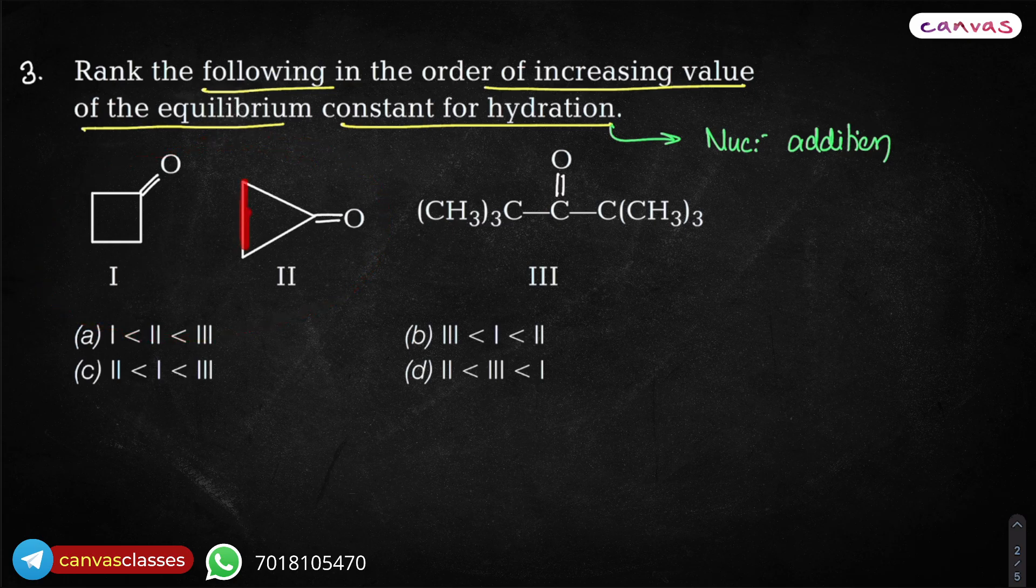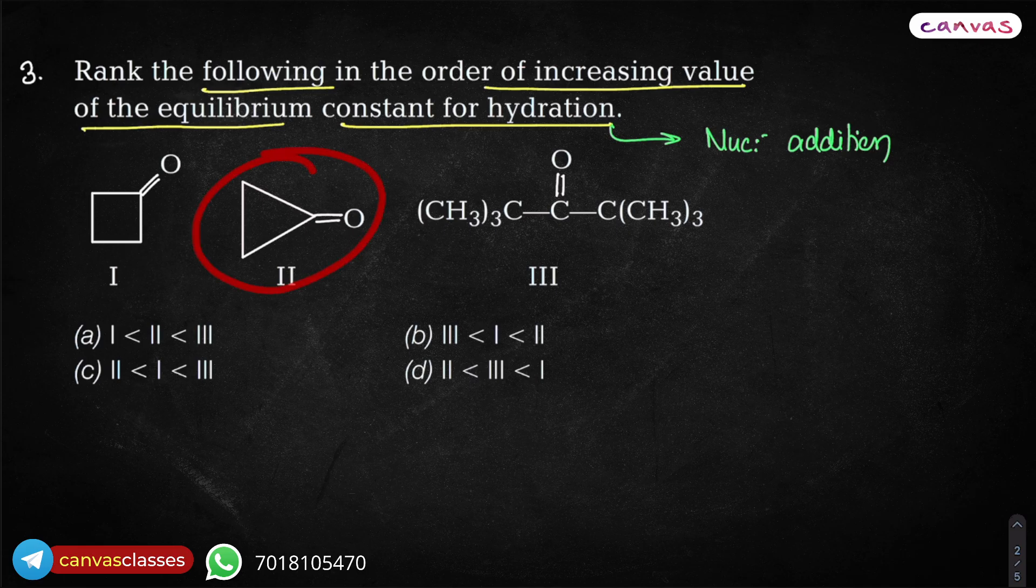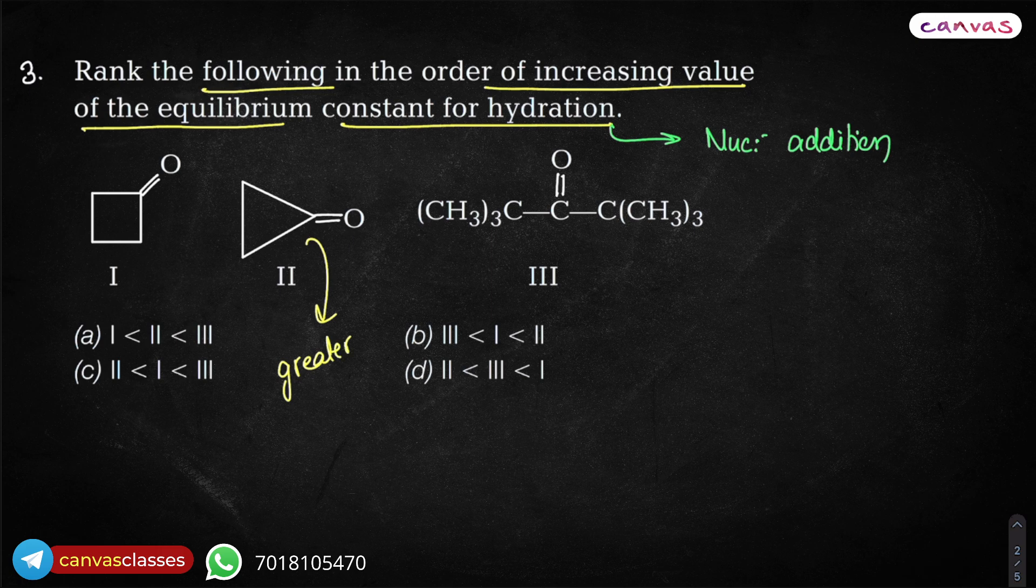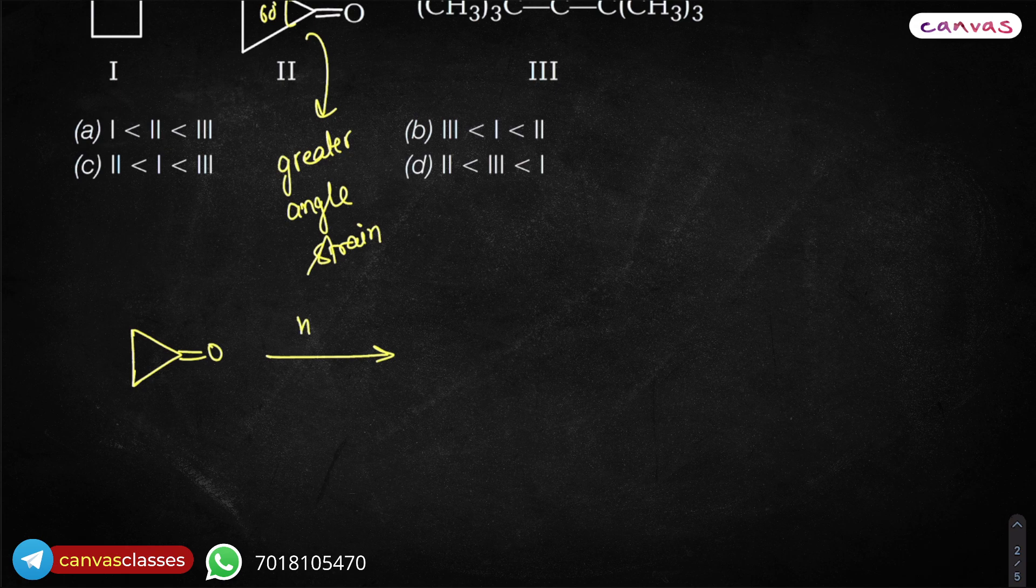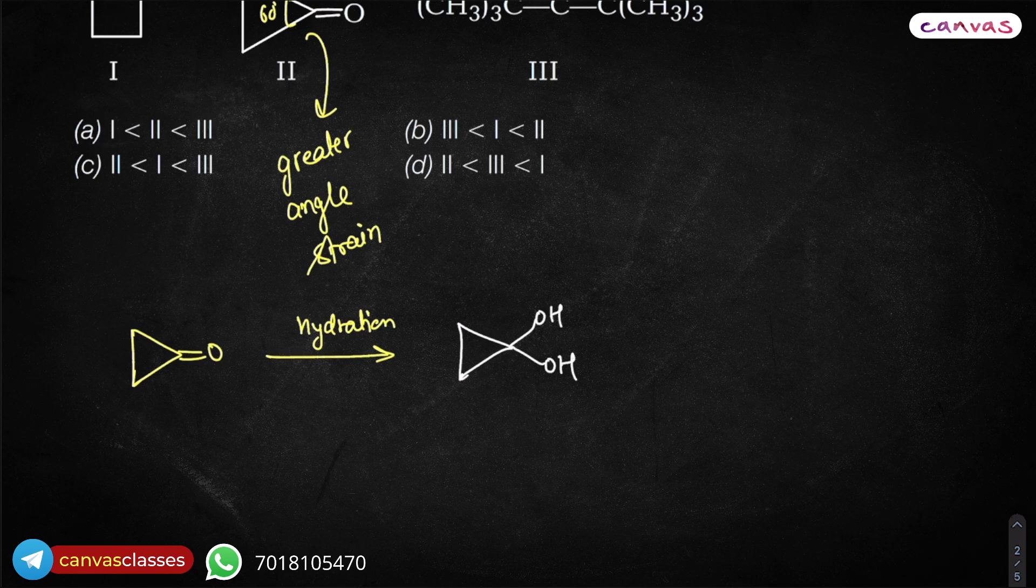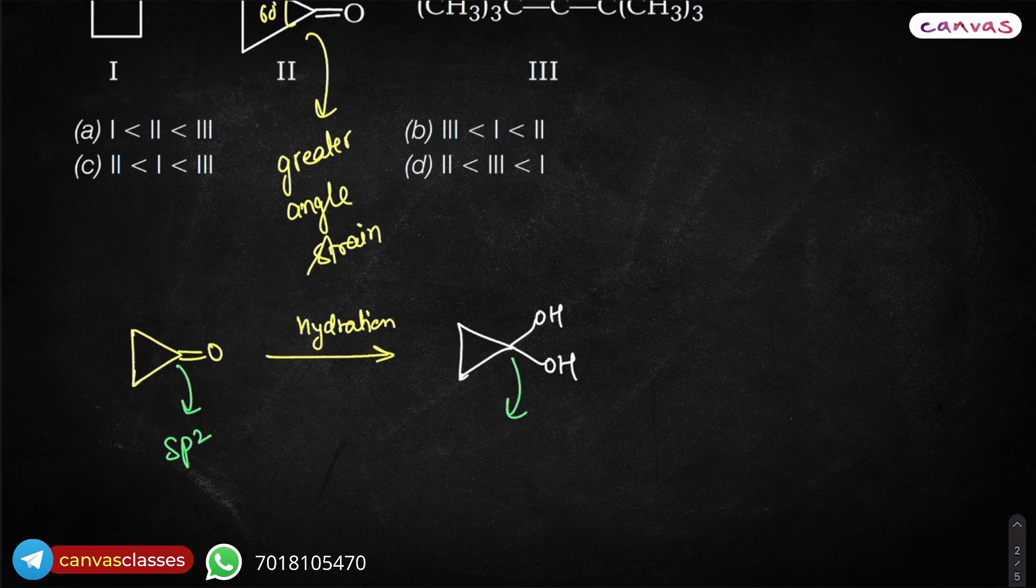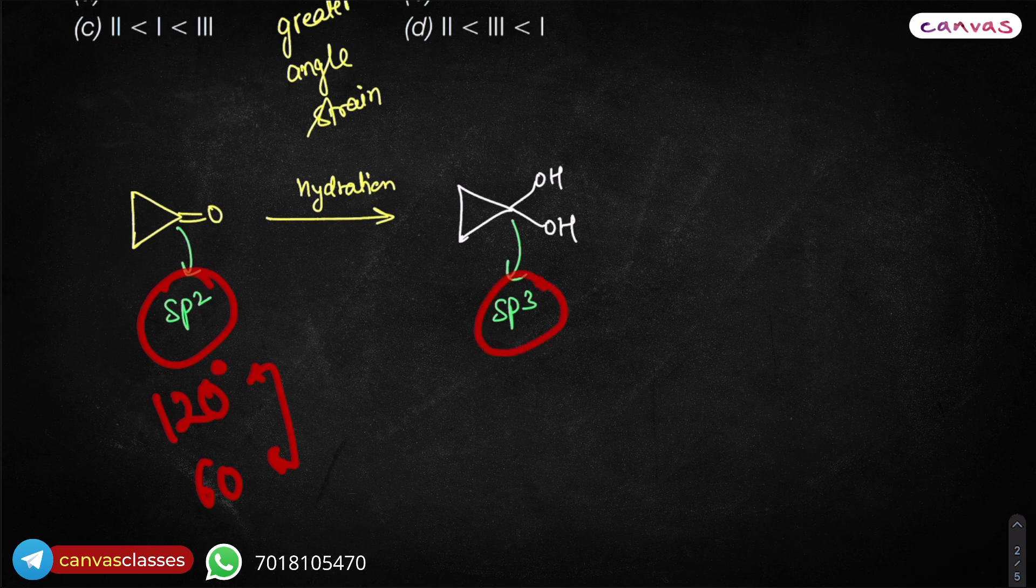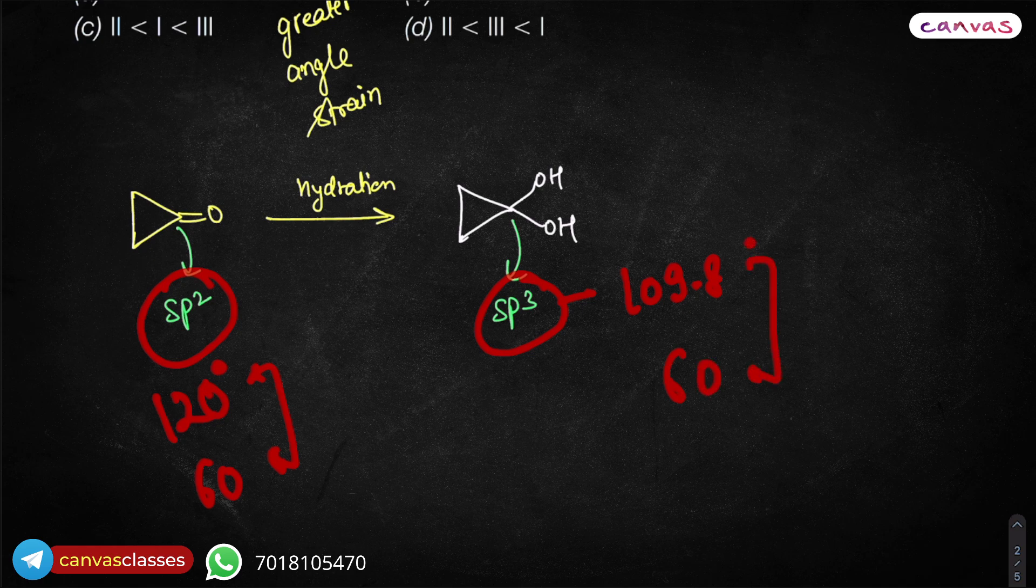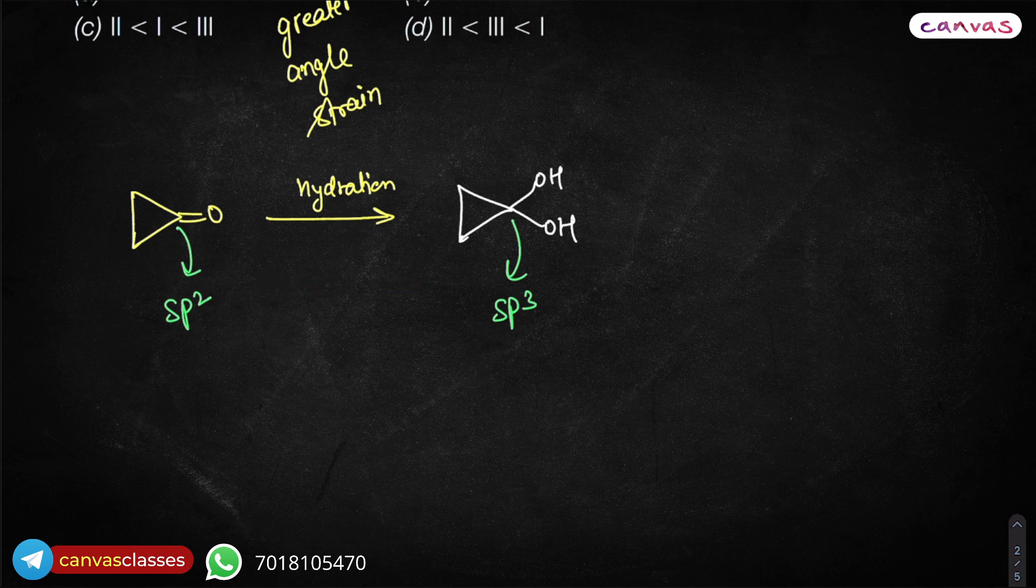But in one and two, because they are having some angle strain, this has greater angle strain. This has greater angle strain because of the 60 degree angle. So when you actually do a nucleophilic attack and complete the hydration, it is converted into this form. From original sp² hybridized carbon, now it is sp³. So in sp², the ideal angle should be 120. But it was 60. So there is a great difference. But in sp³, ideal angle is 109.8 but actually is around 60. So difference is a little lesser than before. So the angle strain has eased a little bit.